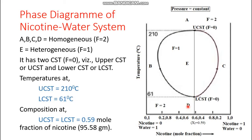We have to do the degree of freedom calculation. The phase rule gives F = 3 − P. For the homogeneous zone, the number of phases is 1, so 3 − 1 = 2. This is bivariant.